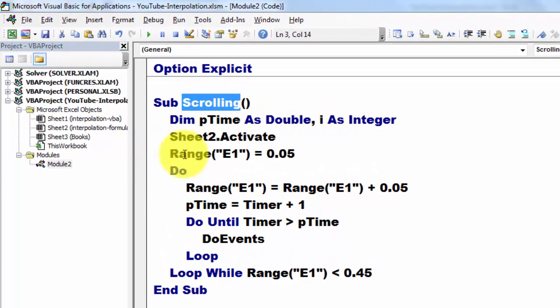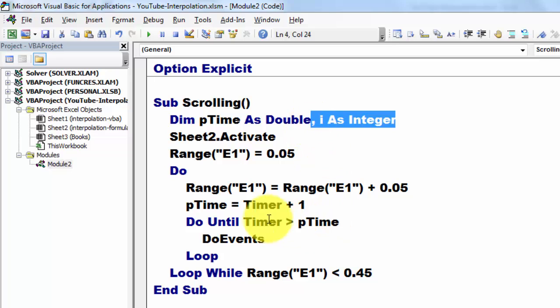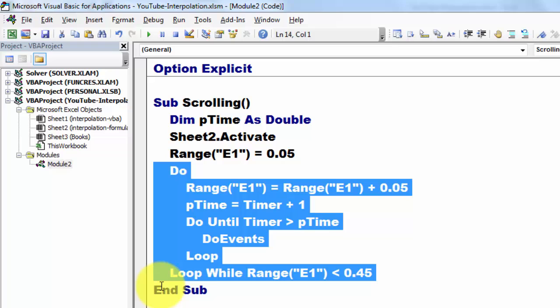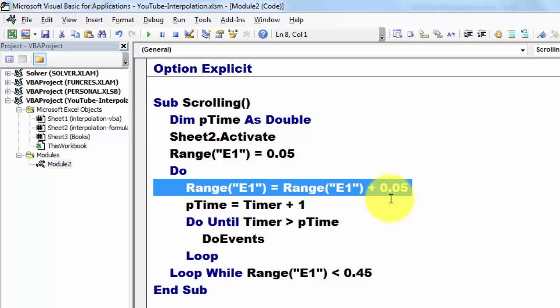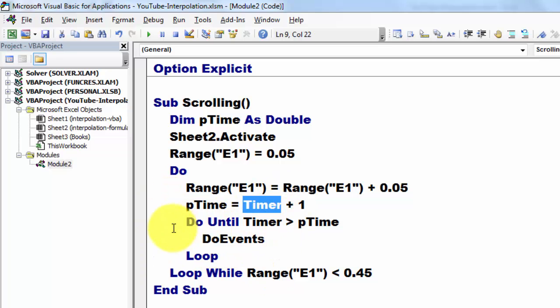I created a macro by inserting a module, and I happen to call that sub Scrolling. I declare two variables. We make sure that we are on sheet two, which is the interpolation with formulas. We put as a starting value in there 0.05, and then we do a do loop. Do loop while range E1 is less than 0.45. If you go past that point, there is no next cell anymore in your observed values. Then we add each time in the loop 0.05 to the value in range E1.